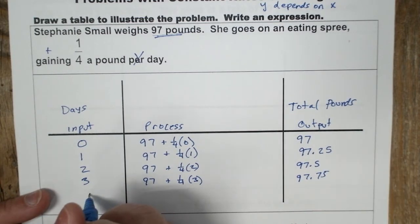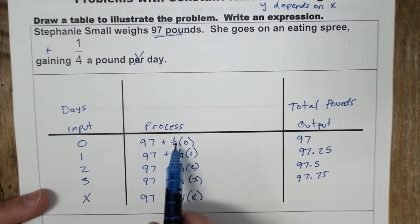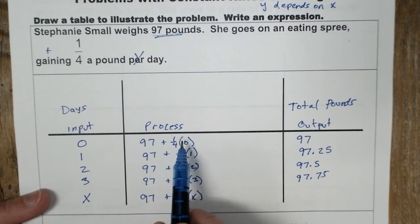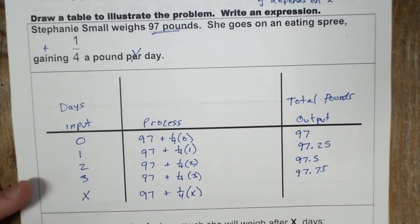So whatever I'm inputting, I'm starting with 97. I'm taking it and I'm multiplying it by a quarter. This is a constant. This is a coefficient. That coefficient is being multiplied by something that changes.